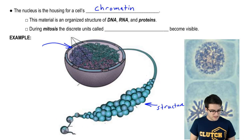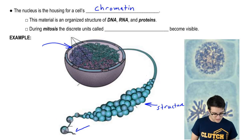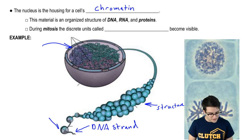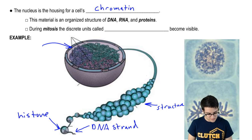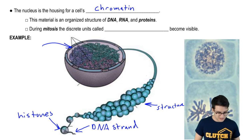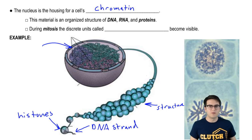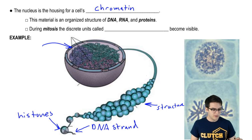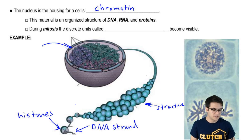And if we pull a strand of that chromatin out, we see that it has some structure. Part of this structure is that the DNA strand is wound around these proteins called histones. And again, we have to organize the structure of our DNA because it needs to be constantly read and processed by our cell's machinery.